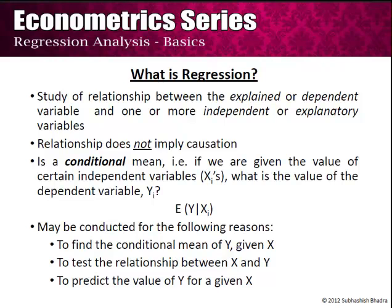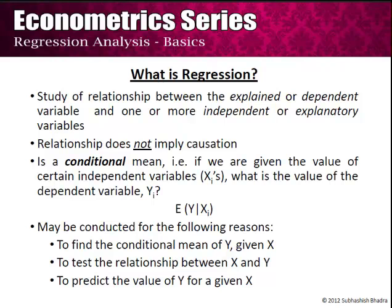Thirdly, regression is a conditional mean — that is, it gives us the mean value of Y for a particular value of X. If X, which is the independent or explanatory variable, takes a large number of values, and if Y is functionally dependent on X, then for every value of X you would expect the mean of Y to be different. For example, if they are positively correlated, you would expect that as X increases the expected value of Y also increases. Hence, the study of this relationship between the expected value of Y conditional on the value of X is known as regression.